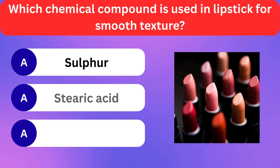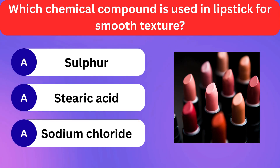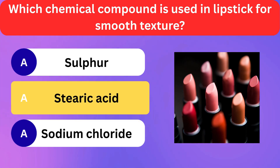Which chemical compound is used in lipstick for smooth texture? Sulfur, Stearic acid, Sodium chloride. Correct answer is stearic acid.